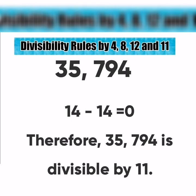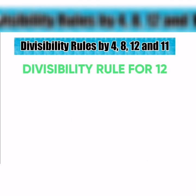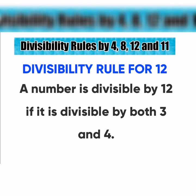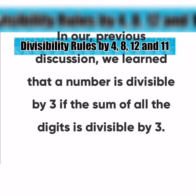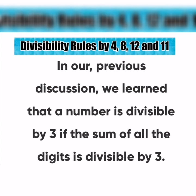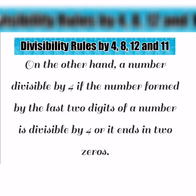Now, let's have the divisibility rule for 12: A number is divisible by 12 if it is divisible by both 3 and 4. A number is divisible by 3 if the sum of all its digits is divisible by 3. On the other hand, a number is divisible by 4 if the number formed by the last two digits is divisible by 4, or it ends in two zeros.